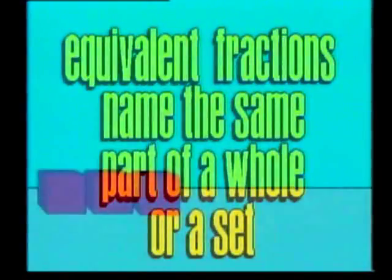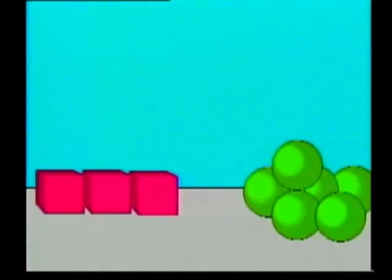What if we have three red blocks and six green balls? Two thirds of the red blocks equals two. Four sixths of the green balls equals four. In this example, two thirds and four sixths are not equivalent fractions. Why? These fractions don't describe parts of the same set. They describe parts of different sets. Two thirds of the set of blocks does not equal four sixths of the set of balls.